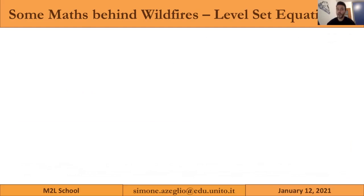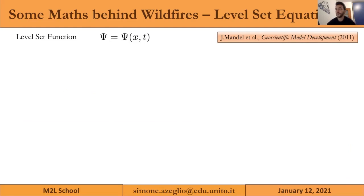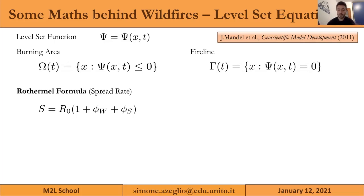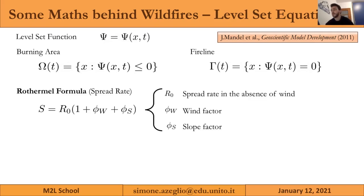I'll now introduce the basic mathematical structure behind the wildfire models. There are a number of PDEs, but the most important is the level set equation. The model starts with the level set function, from which we can specify the burning area at time t and the fire line, which is the boundary of the burning region. The model uses a semi-empirical approach to find the fire spread rate s from the Rothermel formula, where R₀ is the spread rate in the absence of wind, and there are wind factors and slope factors related to the specific terrain structure.